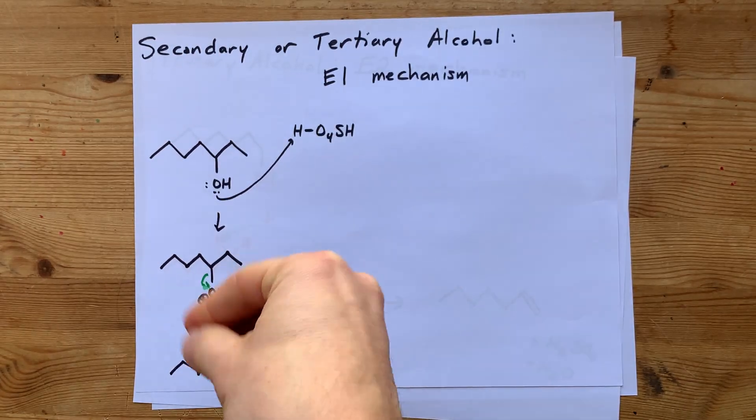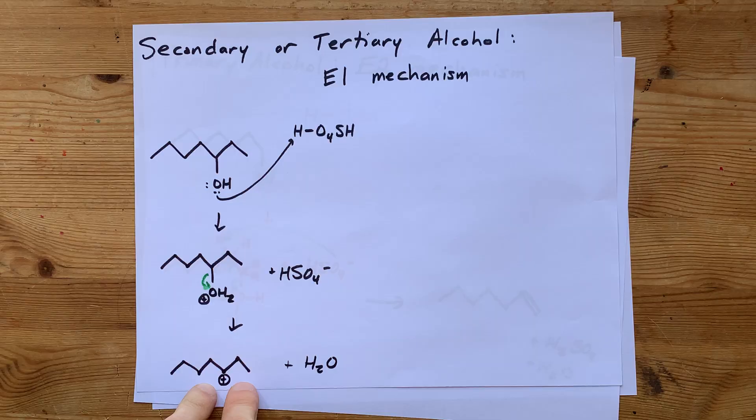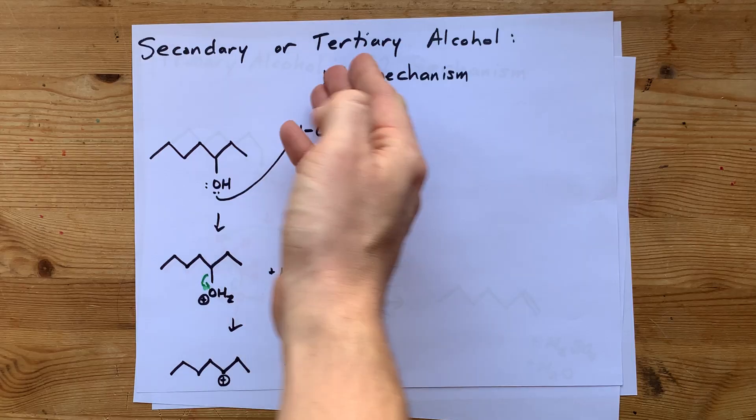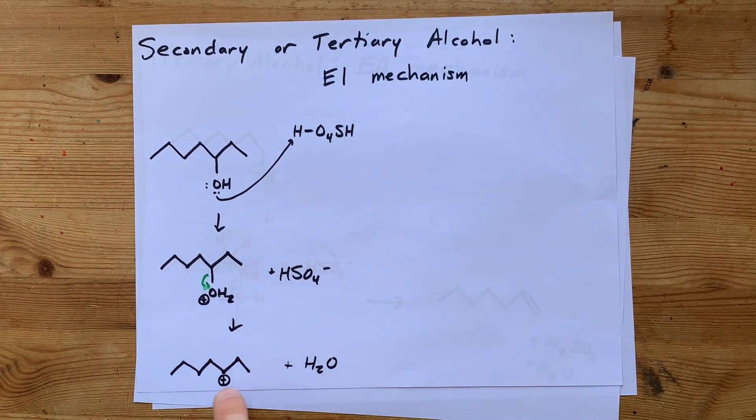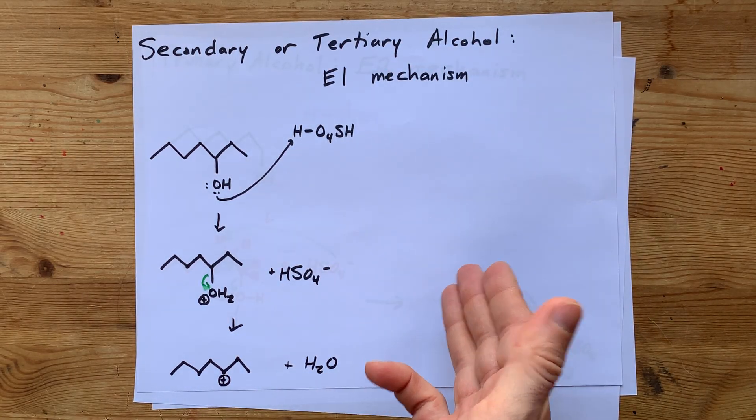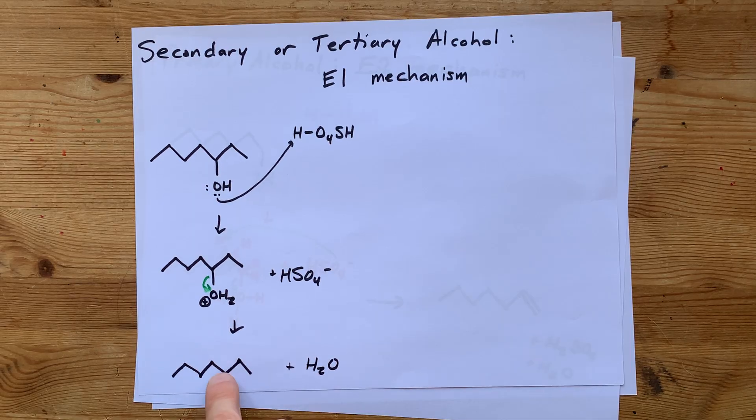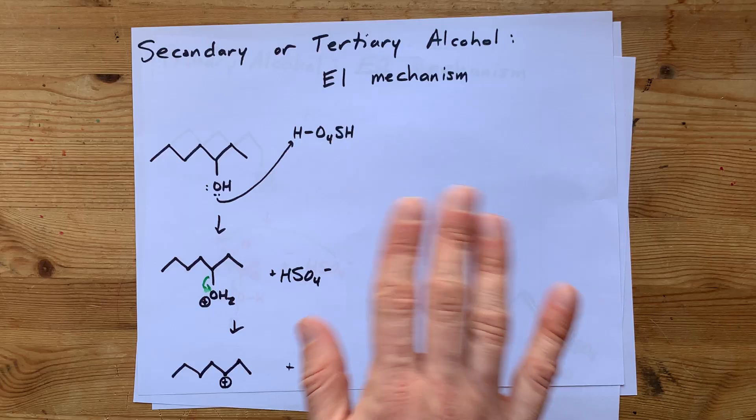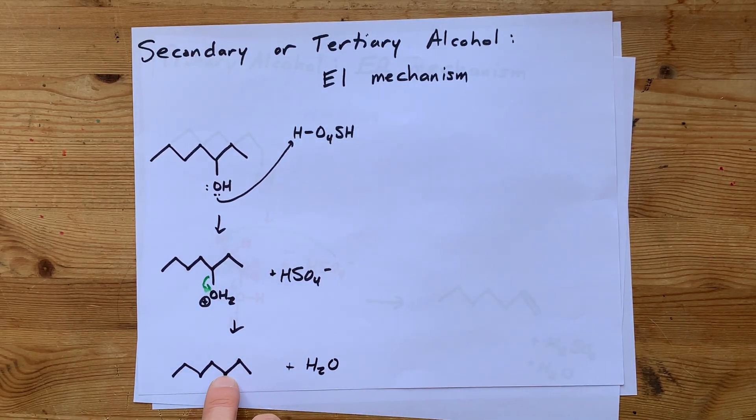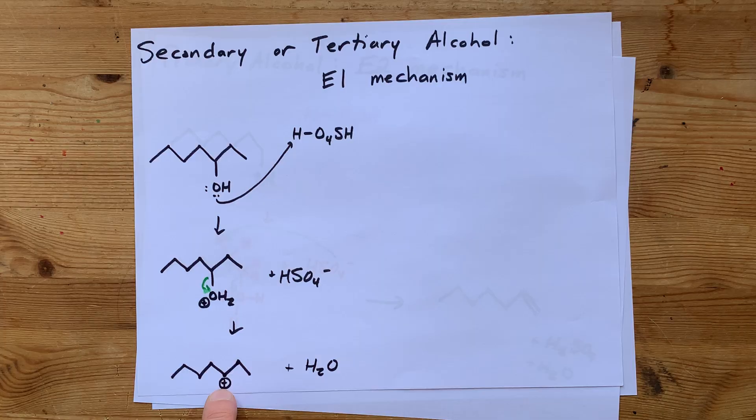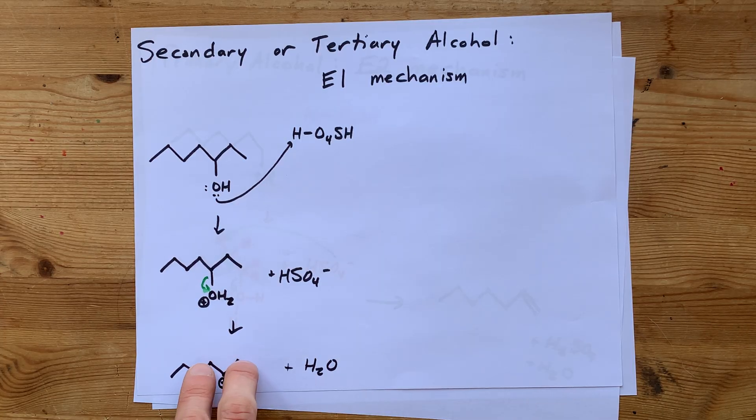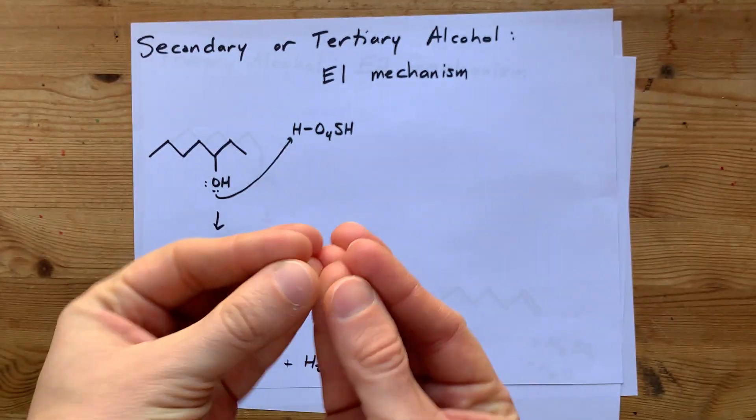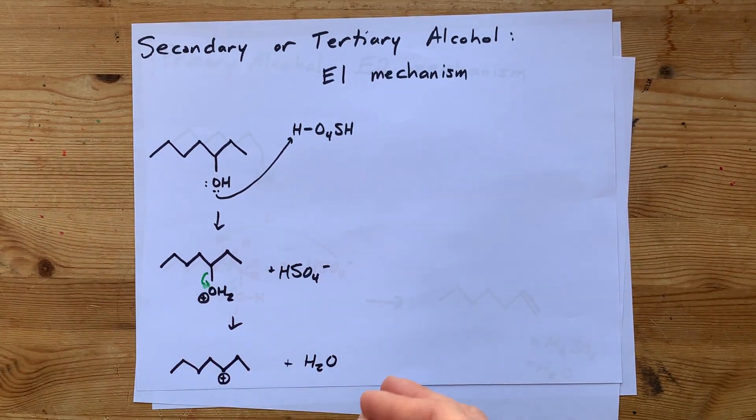This carbocation intermediate is the reason this mechanism only occurs for secondary and tertiary alcohols. A primary carbocation, a plus charge on a carbon that isn't connected to more than two other carbons, is not very stable at all. You need that carbon that has the positive charge to be connected to at least two other carbons in order for it to be stable enough to operate as this intermediate.